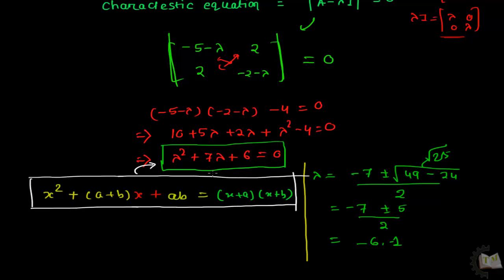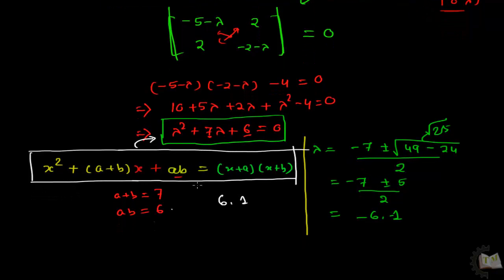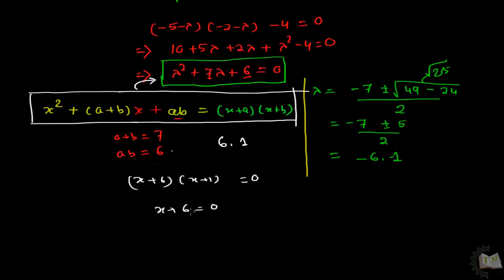Observe the equation: the coefficient 7 means A plus B equals 7, and the constant 6 means A times B equals 6. Find two numbers whose sum is 7 and product is 6 — those are 6 and 1, since 6 plus 1 equals 7 and 6 times 1 equals 6. So the factored form is (x plus 6)(x plus 1) equals 0, giving x equals minus 6 and x equals minus 1.